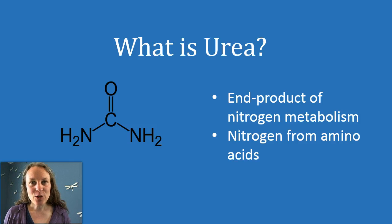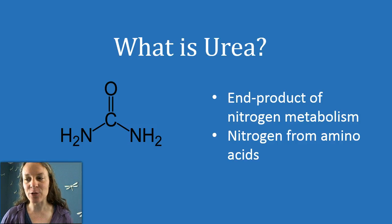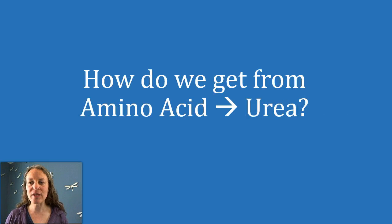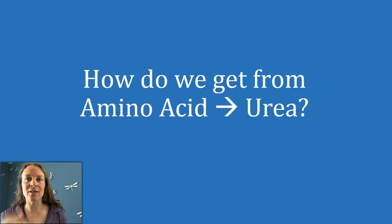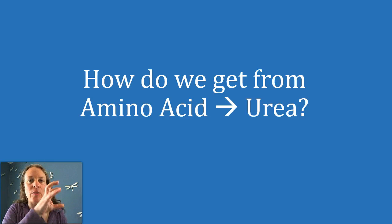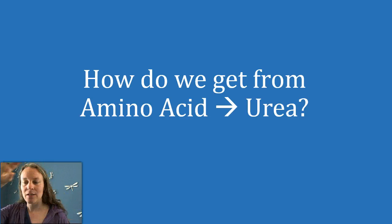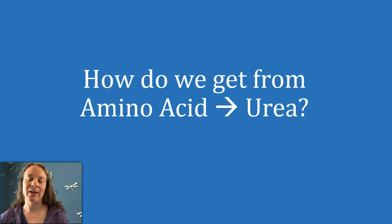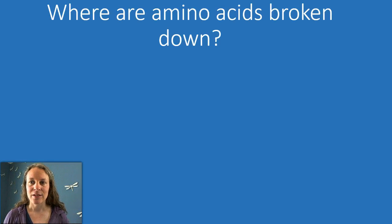And where do we get nitrogen? We primarily get nitrogen from amino acids that enter the body. So the big question is, if we're trying to get rid of nitrogen and it enters the body as amino acids, how do we get that nitrogen from amino acids into the form of urea?